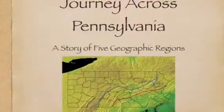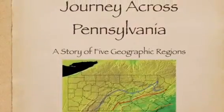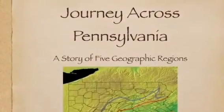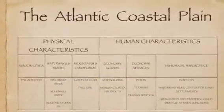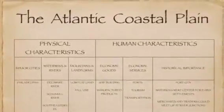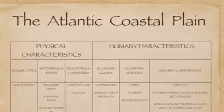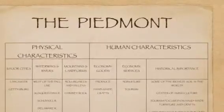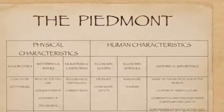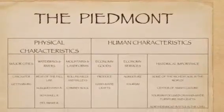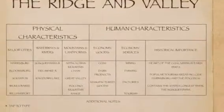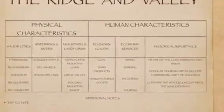This was the keynote about the five geographic regions of Pennsylvania. The first slide was about the Atlantic Coastal Plain. The second slide was about the Piedmont region, and the next slide was about the Ridge and Valley region.